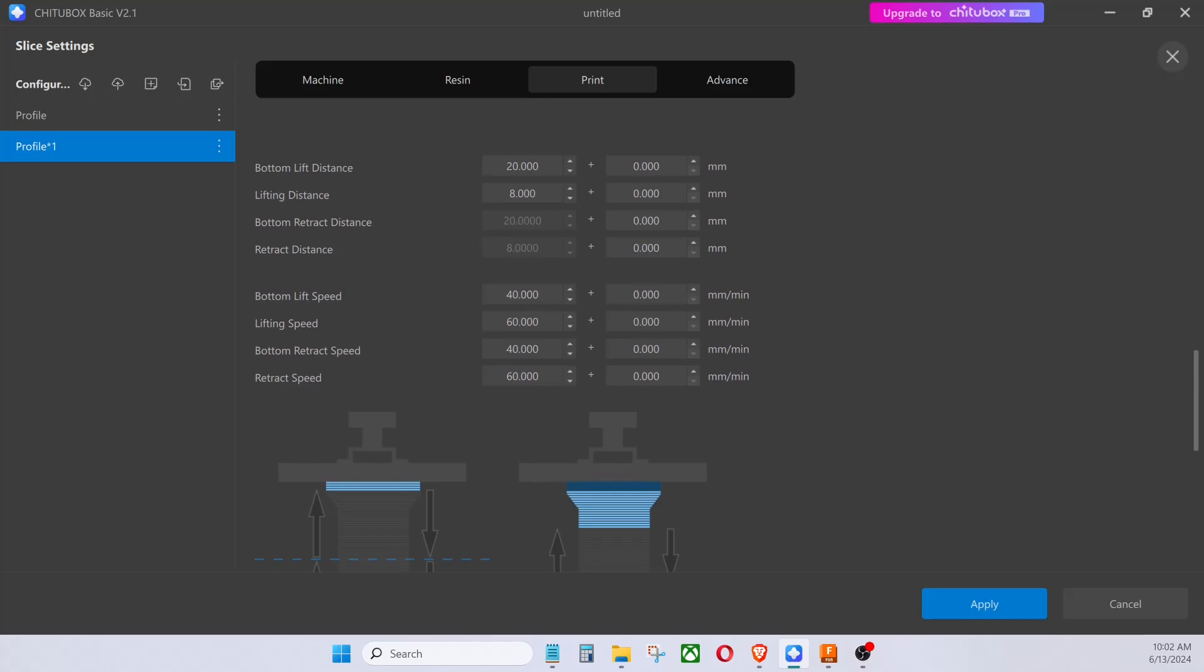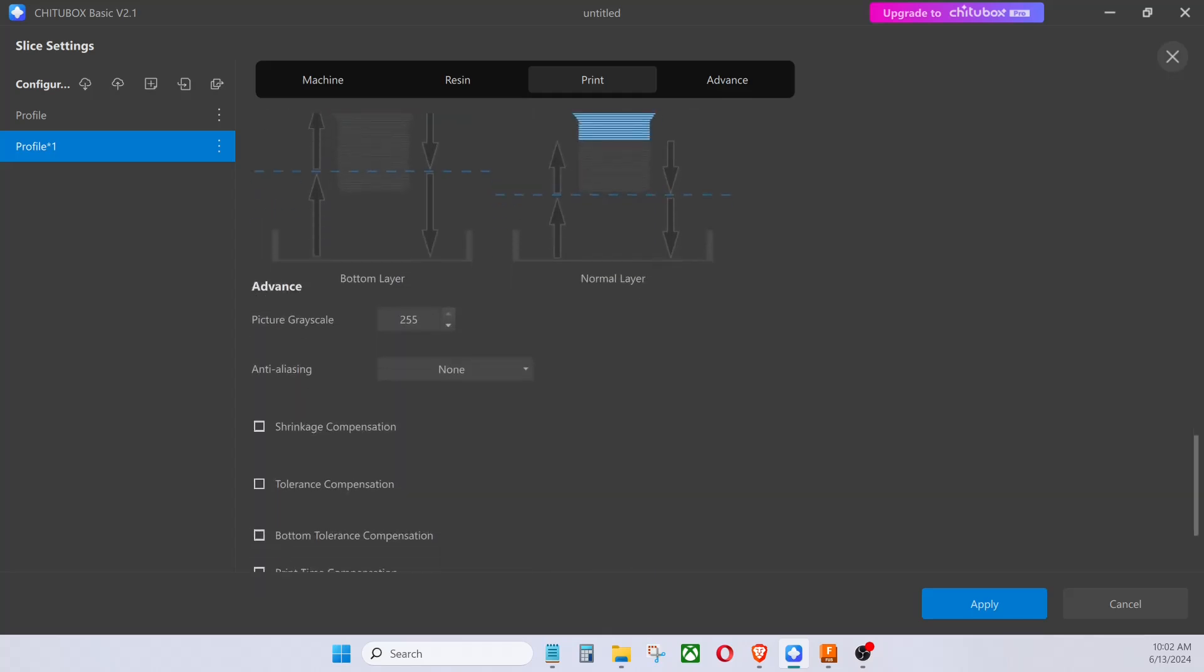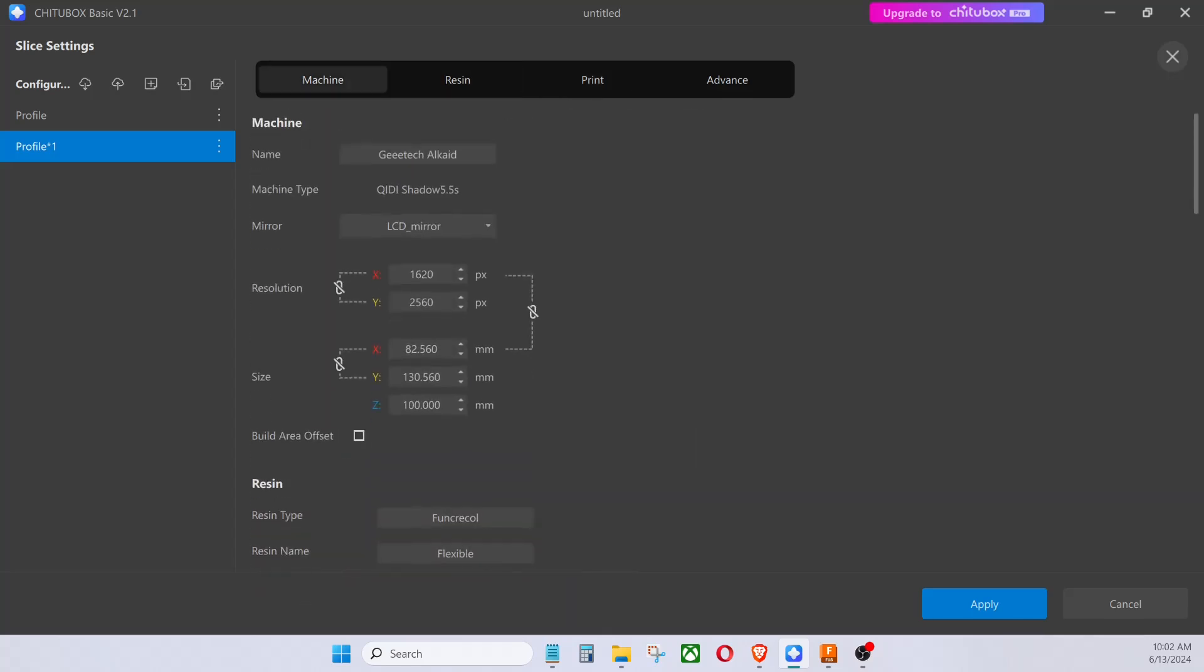And here are the rest of the settings. Bottom lift distance 20. Lifting distance 8. Bottom lift speed 40. Lifting speed 60. Bottom retract speed 40. Retract speed 60. And that is what we are going to be printing and the settings we are going to be using.